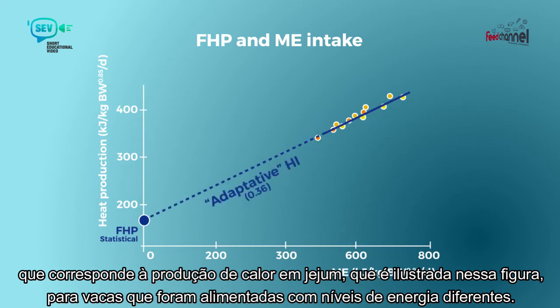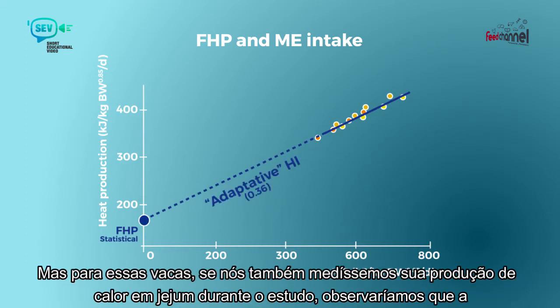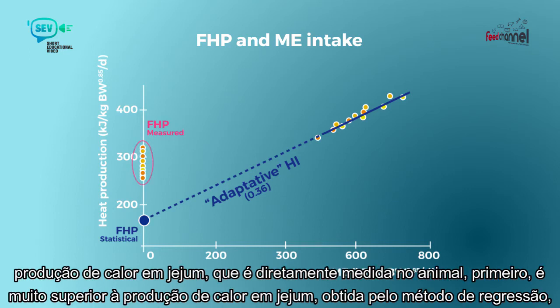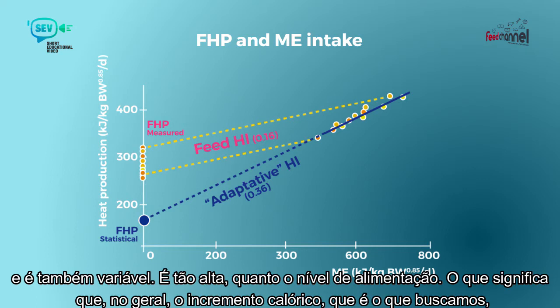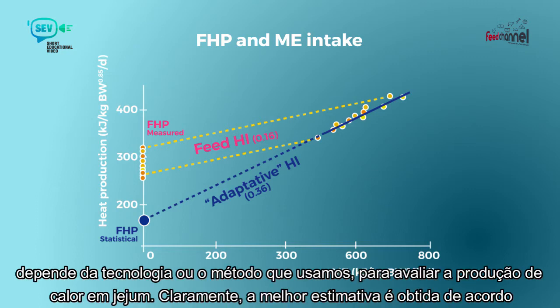For cows fed at different energy levels, if we also measure their fasting heat production directly during the trial, we can see that the directly measured fasting heat production is much higher than that obtained by the regression method, and is also variable — it is as high as the feeding level is high. This means that the heat increment we are looking for is dependent on the method we use for evaluating fasting heat production.